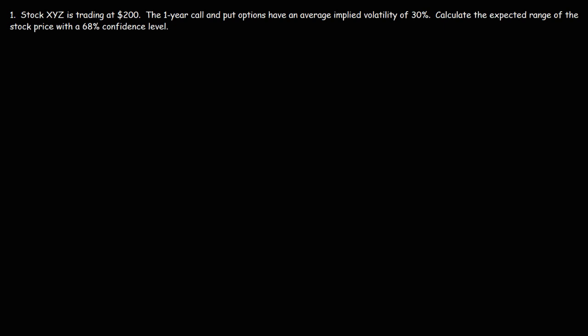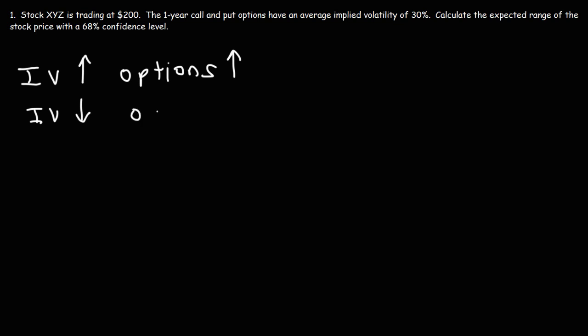Let's talk about implied volatility. Implied volatility can help you determine the magnitude of a stock's future price changes as implied by the prices of the options. When implied volatility goes up, the value of option prices go up. When implied volatility goes down, the value of option prices — that is, call and put options — they go down.